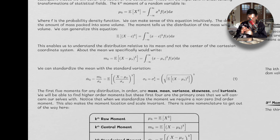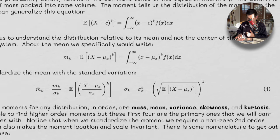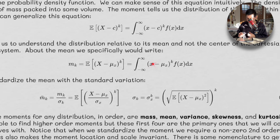About the mean, we specifically would write this, where c becomes mu x. x is just a label for our x-axis, really. But this is the value, the difference between the value and where the mean is.